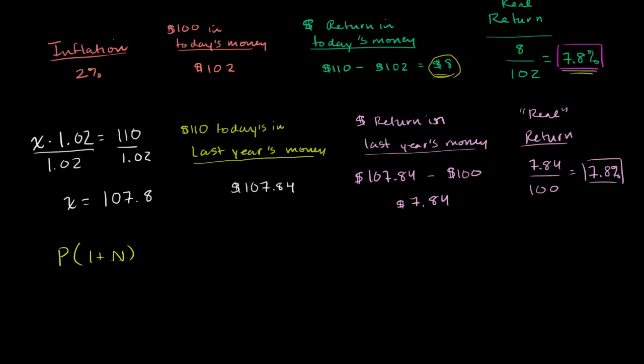And here we're assuming that we're writing it as a decimal. So in the example we've been using, it was 10%, so this is going to be 0.10, or this whole value is going to be 1.10. And so this is how much we're going to get after a year has passed. So in our example, this was the $110, $100 compounded by 1.1.